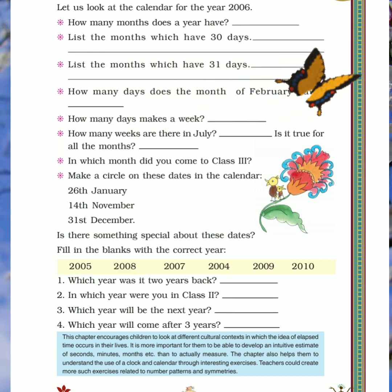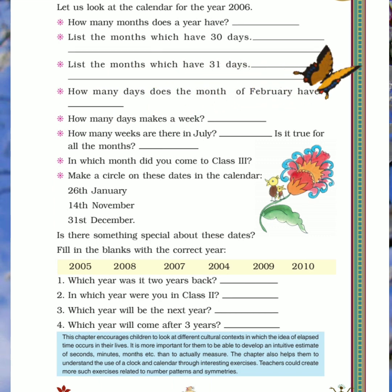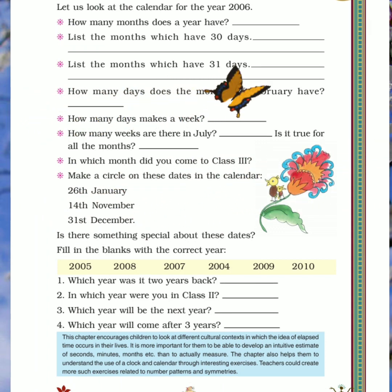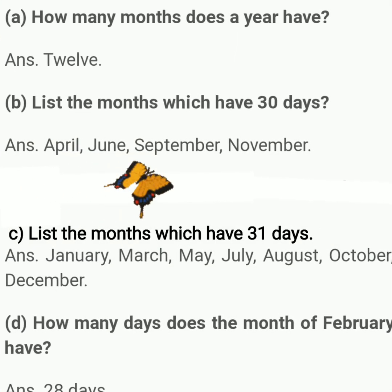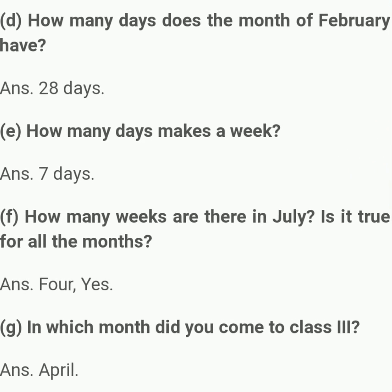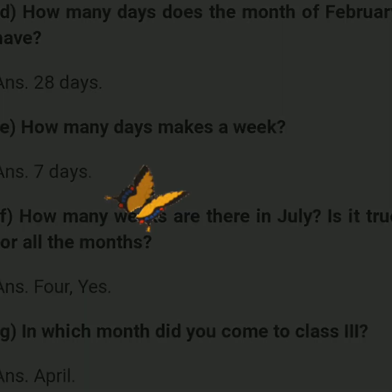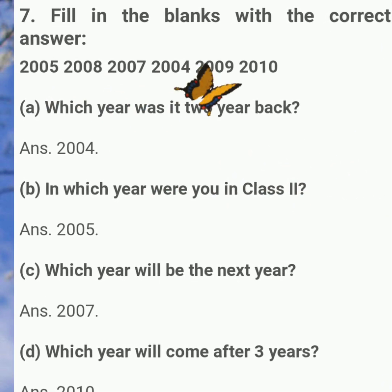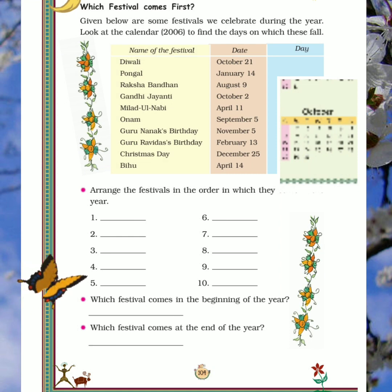Now come to the next question: Fill in the blanks with the correct year. Yellow colored mein aapko kuch year ke naam dikhayi de rahe honge — 2005, 2008, 2007, 2004, 2009, and 2010. Neeche 4 questions hain, aapko sahi option wahan likhna hai. For example, the first question: which year was it two years back? Agar abhi 2006 hai, toh 2 saal pehle kaunsa saal hoga? 2004.